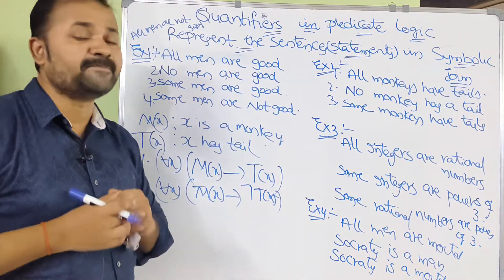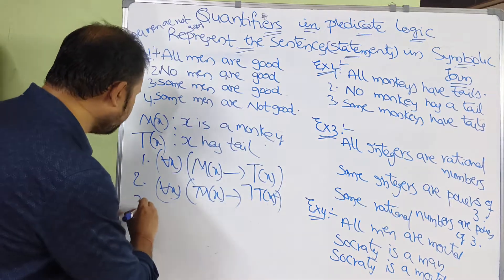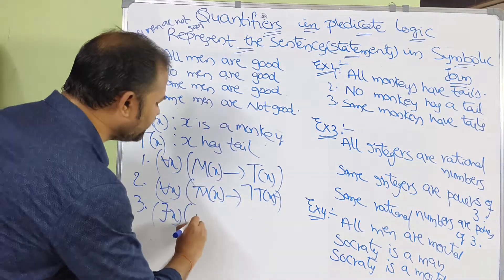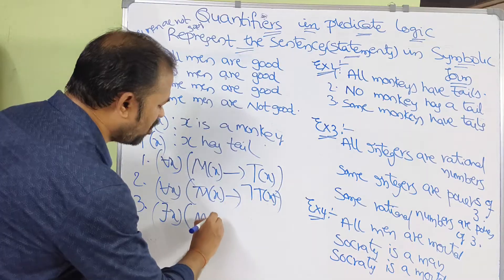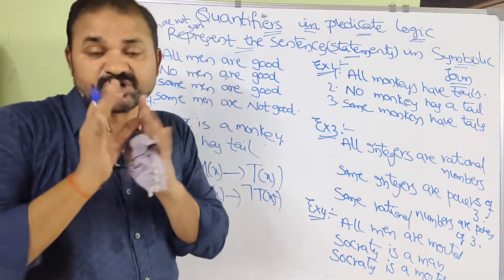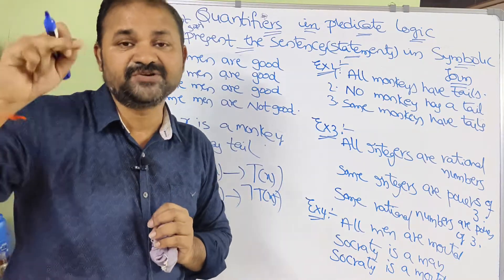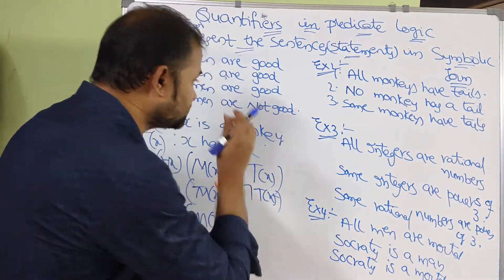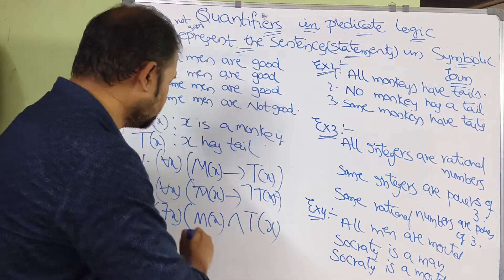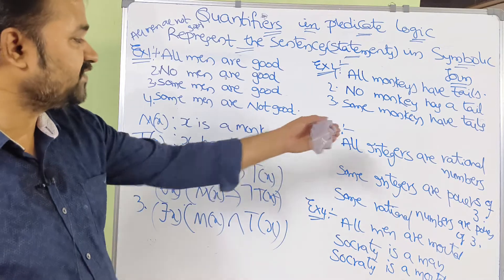Third sentence: 'Some monkeys have tails.' Some means we use the existential quantifier. There exists x — monkeys means M(x), and since it is 'some', we should not use implies, we use AND. Tails means T(x). So: ∃x(M(x) ∧ T(x)).